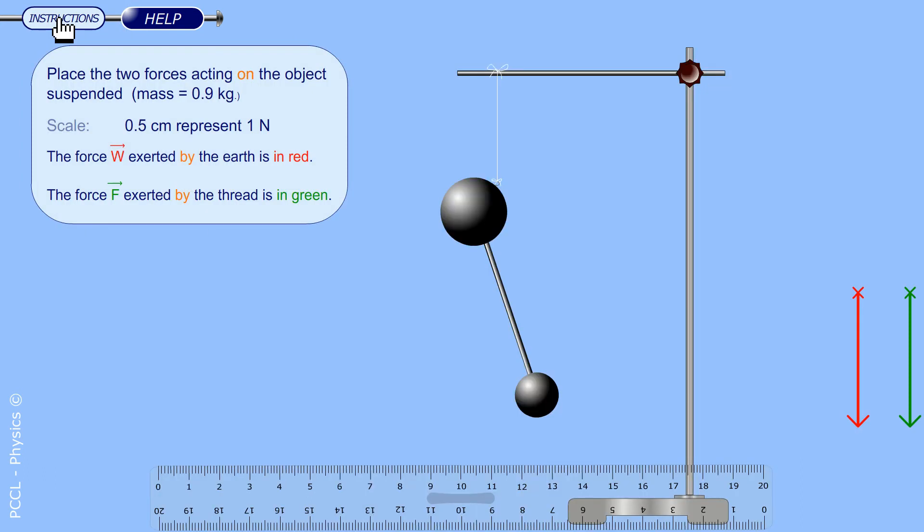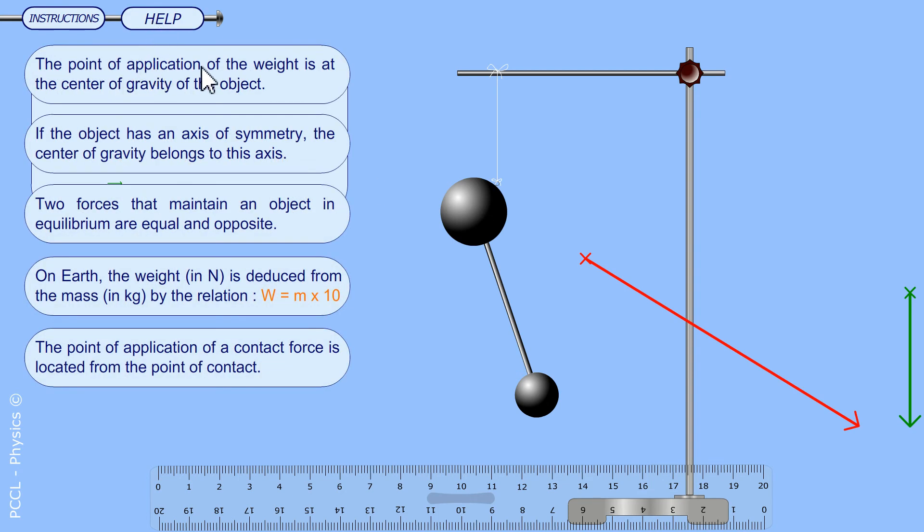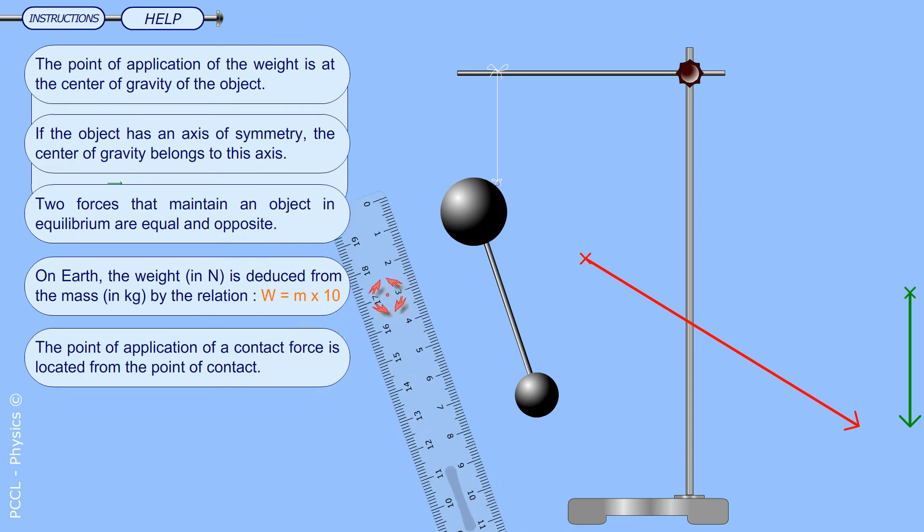Next situation. Here a weird object. It is in balance. There are therefore two forces to represent. And I suggest start with weight. But where is the point of application? I place the point of application at the center of gravity. That is to say at the intersection of the vertical and the axis of symmetry.